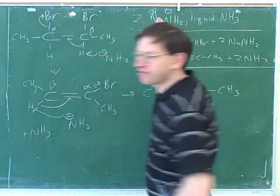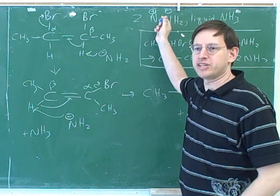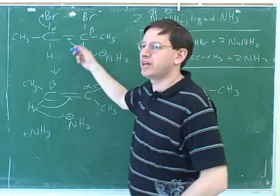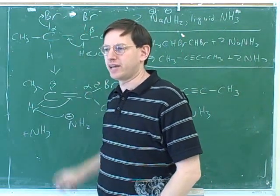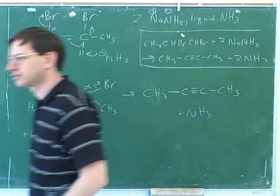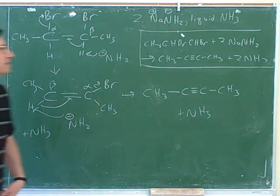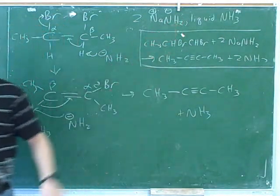Why did we need two equivalents of base? Because we wanted to do two eliminations. That's what this number two here was representing, that we had to put in the two equivalents of base. The name for this is double elimination. That's a logical name. We had to do two eliminations here. You can see that a base we're using a lot for alkynes is sodium amide, NaNH2.